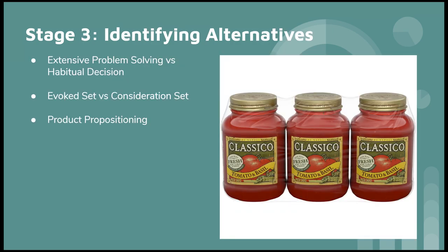For stage three, identifying alternatives, we have three main ways that people do it, but we're going to focus on evoked and consideration. So with evoked, it's basically every pasta sauce you can think of, and consideration is essentially what you would buy of that. And from there, you run into biases or brand loyalty where you get in the groove of what you like.